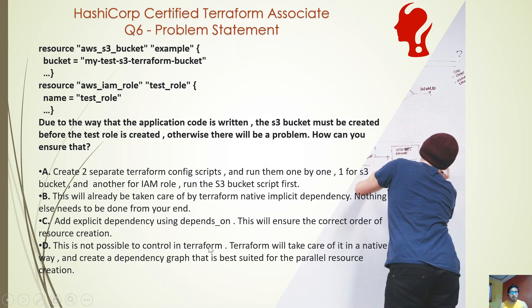Option D says: this is not possible to control in Terraform — Terraform will take care of it natively and create a dependency graph best suited for parallel resource creation. This is incorrect. It can be controlled using 'depends_on'. Terraform will create a native resource dependency graph, but that will not always suit your needs — that graph might try to create the IAM role first before creating the S3 bucket, which is not what you want.